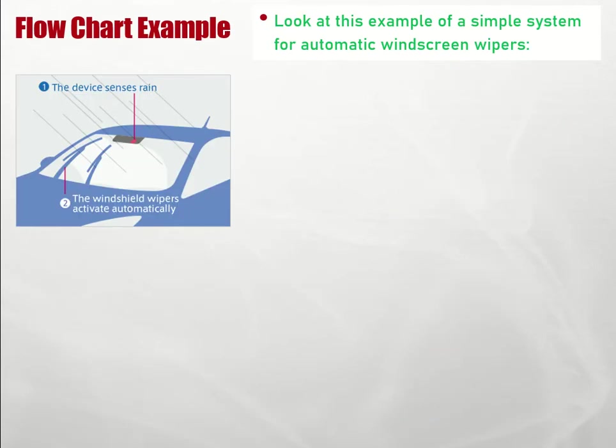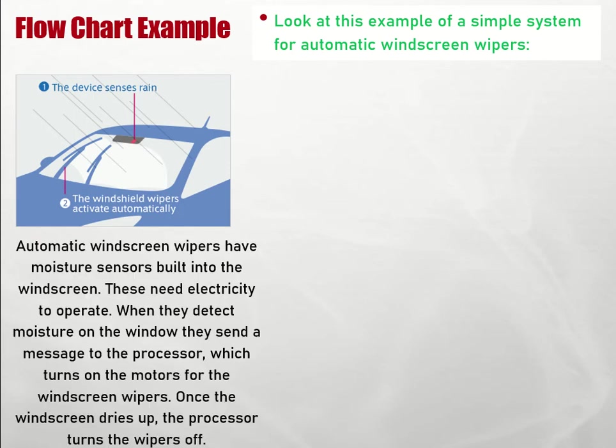Here's an example. Imagine automatic windscreen wipers — you might have these in a car. Automatic windscreen wipers have a moisture sensor built into the windscreen, and these need electricity to operate.